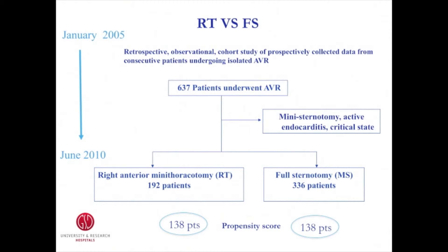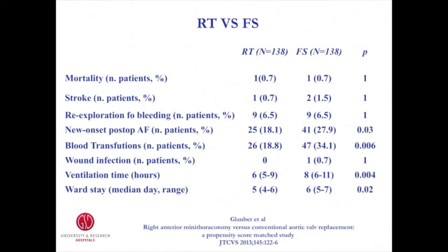The potential advantages of the right thoracotomy approach were demonstrated after comparing patients undergoing conventional surgery. Specifically, 138 patients undergoing right thoracotomy were matched to a full sternotomy group using propensity score analysis. The overall in-hospital mortality was 0.7%, with no difference between the two groups. Minimally invasive AVR through right thoracotomy was associated with a lower incidence of postoperative atrial fibrillation (18% versus 30%) and blood transfusion (19% versus 34%) when compared to full sternotomy.